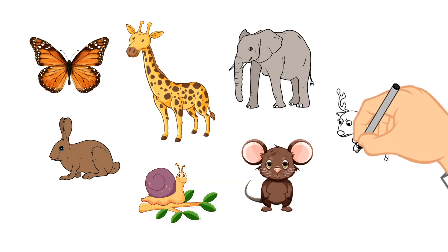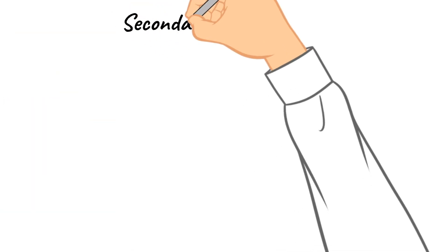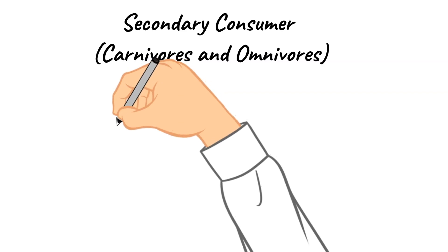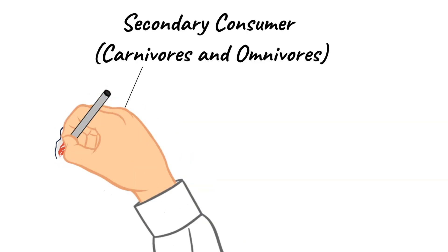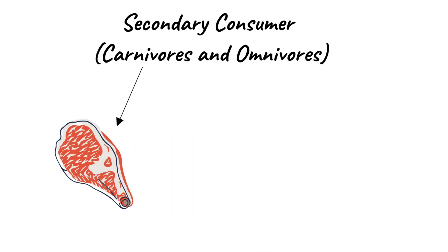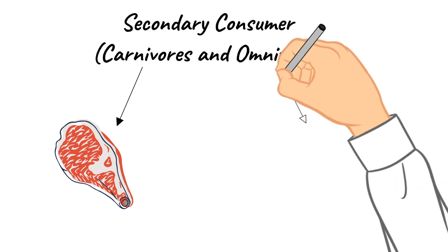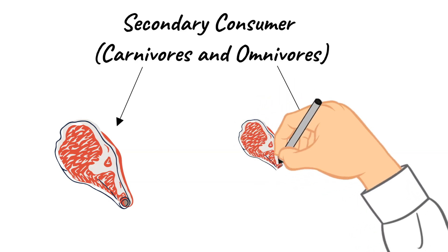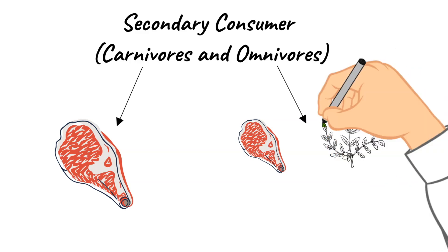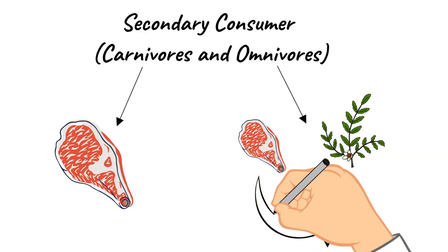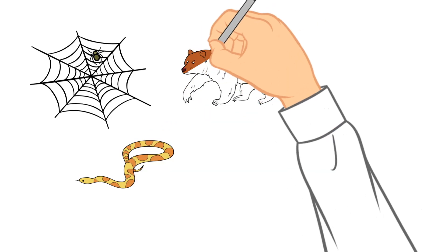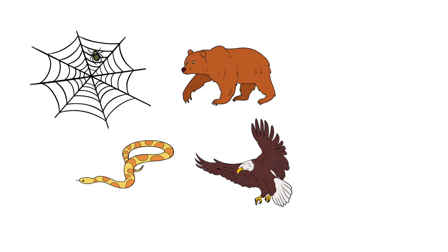The second type of consumer is called secondary consumers. Secondary consumers can be both carnivores and omnivores. Carnivores eat primarily meat for their energy — they rely on other animals and consuming them for energy and survival. Omnivores are a little different because they rely on both plants and animals for their energy. Examples include spiders, snakes, bears, eagles, wolves, and rats.